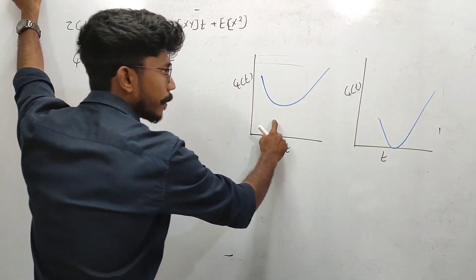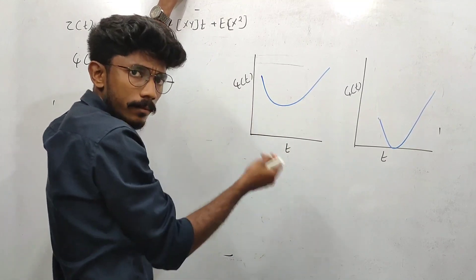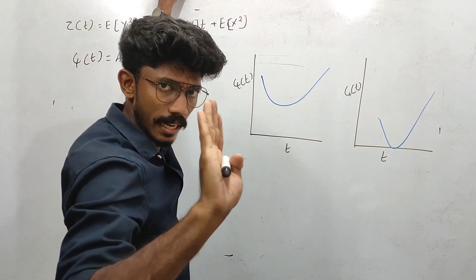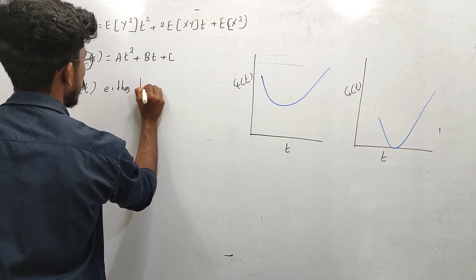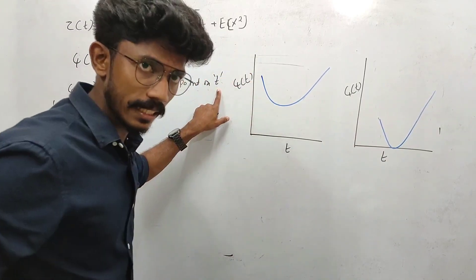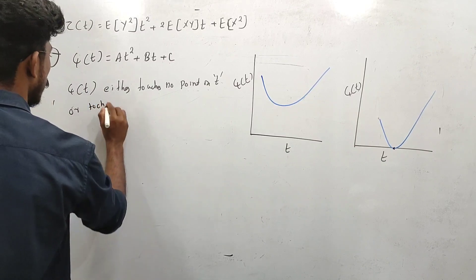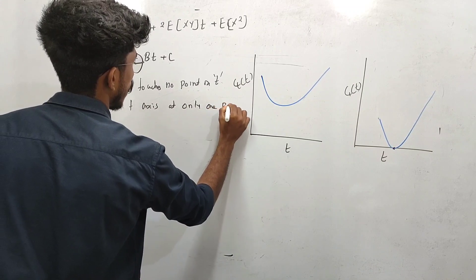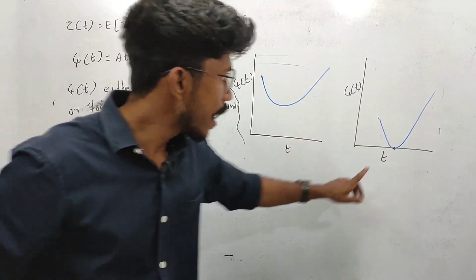Psi of t is a function of t. Psi of t is a real number — it is a real number, a t-axis function, a quadratic function. This graph doesn't touch the t-axis. From figure one, the graph of psi of t either touches no point on the t-axis or touches the t-axis at only one point. This graph is either not touching the t-axis or touching it at one point.